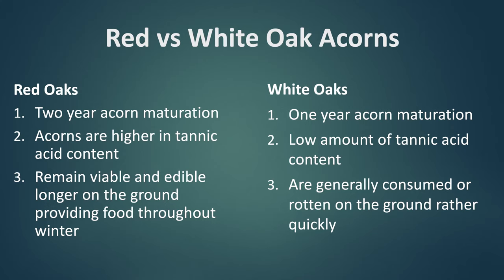From a deer hunting perspective: if white oak acorn production was poor and red oaks are starting to drop in mid-to-late October, that tells you to shift away from focusing on white oak flat areas. The red oak's two-year growing season means it still produces acorns every single year — it just takes two growing seasons for each acorn to fully mature before dropping. The next logical question is: how do you tell the difference between a red oak and a white oak?